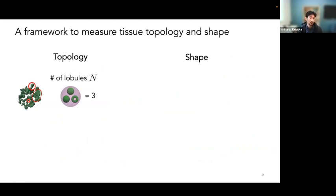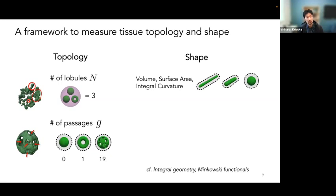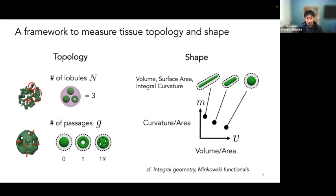I developed a framework to measure these important aspects of morphology. For topology it's relatively simple: we count the number of lobules in the system as well as the total number of passages. G stands for topological genus — a sphere has no passages so genus 0, a torus would be genus 1, and something like a Whiffle Ball might have a very large number of G, 19 here. For shape, we calculate the volume, the surface area, and the integral curvature — defined as the surface integral of mean curvature. By taking these three quantities and normalizing them into non-dimensional metrics, we can construct the shape diagram.